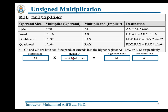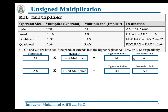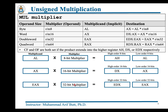If the multiplier operand is 8 bits, the implicit multiplicand is in the AL register, and the implicit destination is the AX register — the lower-order 8 bits in AL and the higher-order 8 bits in AH contain the product. If the operand is a 16-bit number, the implicit multiplicand is in AX, and the result DXAX contains the result: the lower-order 16 bits in AX and the higher-order 16 bits in DX.